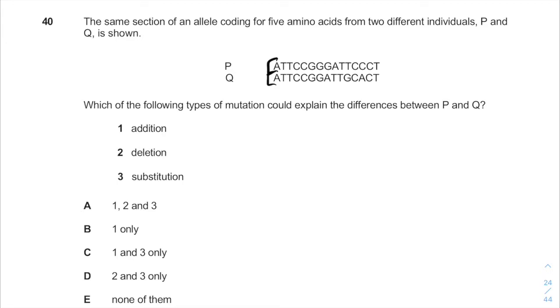Which of the following types of mutations could explain the difference between P and Q? So basically, addition is the addition of a nucleotide in the sequence. It means if we add, for example, guanine, the entire sequence will be just pushed one nucleotide further.